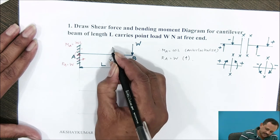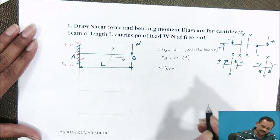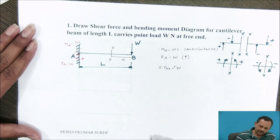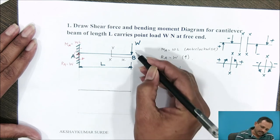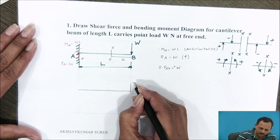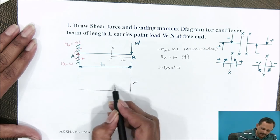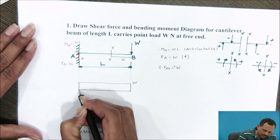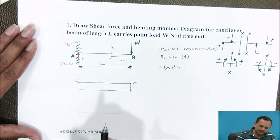Consider the shear force at a distance x from end B. The shear force at section x-x, referring the right side, is W acting downward, considered positive. Therefore the shear force is constant and equal to W throughout. For the shear force diagram: at the free end B, the shear force suddenly increases from 0 to W by a vertical straight line. Between B and A there is no load, so the shear force remains constant and the diagram is horizontal. At A, the shear force decreases from W to 0 by a vertical straight line. The shape of the shear force diagram for a cantilever with a point load at its free end is a rectangle.